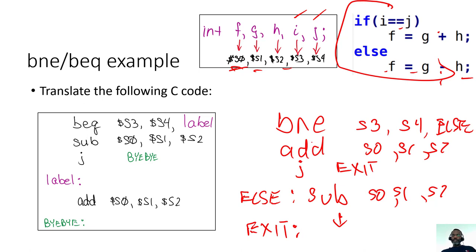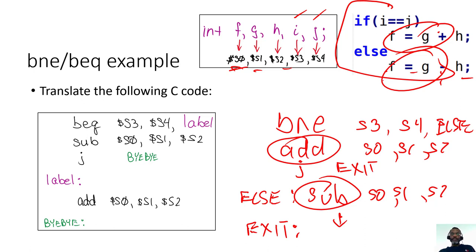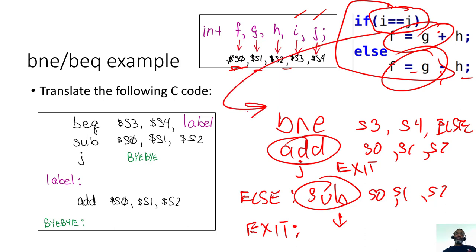That jump guarantees we do only one or the other — that's the BNE approach. Notice here the addition comes first and subtraction second, which follows the natural top-down linear order of the C code. It's not required, but with if-statements and while loops it's sometimes helpful to use the opposite condition — here the C code says 'if equal' but we used a branch based on 'not equal'.